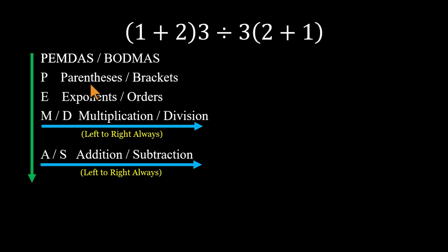So parentheses first, we already did that. 1 plus 2 is 3, and 2 plus 1 is 3. So now it's 3 times 3, divided by 3 times 3.